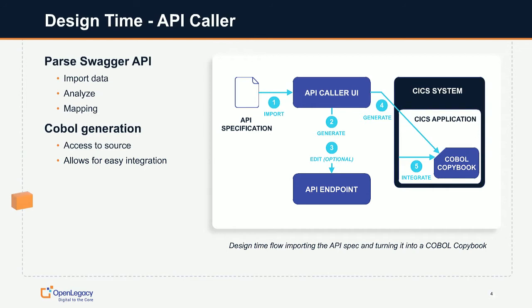When we talk about design, we talk about what assets you have starting out. In this case you have an API specification, typically a Swagger specification. The first thing you have to do is import that into whatever you're working with, clean it up, and then add an API endpoint — something the mainframe itself can connect to. The next key point, which Zev made, is that you want mainframe developers not to have to worry too much about API specifications.